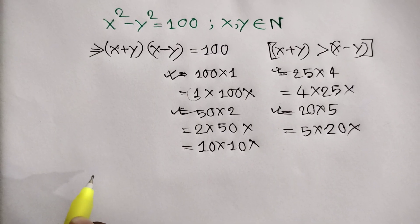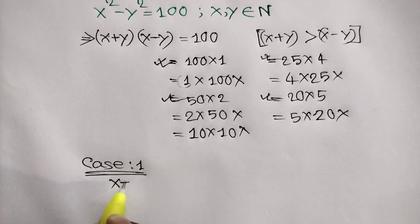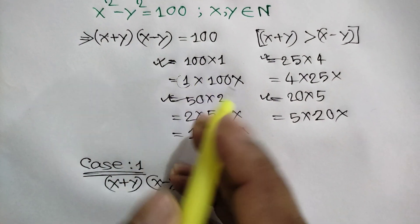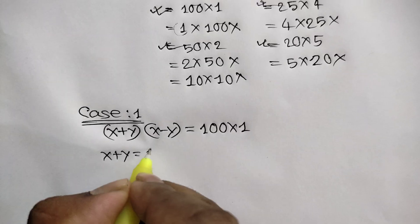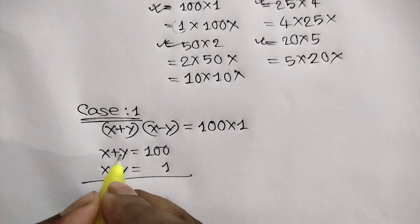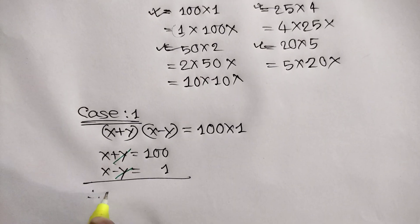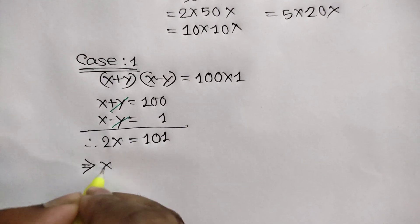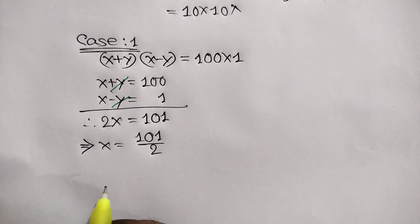Case 1: we write x plus y times x minus y is equal to 100 times 1. So x plus y equals 100 and x minus y equals 1. Adding these two equations, y cancels out and we get 2x equals 101. Dividing both sides by 2, x equals 101 over 2, which is a fractional number, so it is rejected.